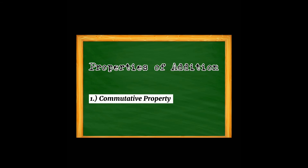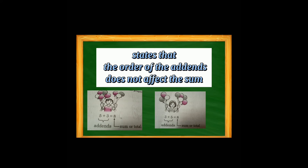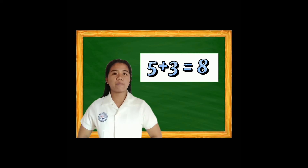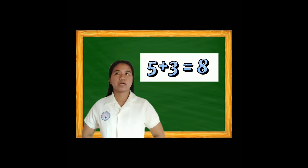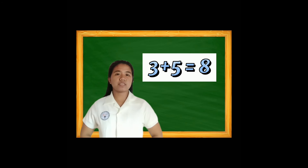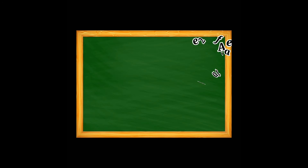Properties of Addition. Commutative property states that the order of addends does not affect the sum. Kahit pagpalibalik natin yung number na 5 at 3, yung sagot pa rin nito ay 8. 3 plus 5 ay 8 pa rin.